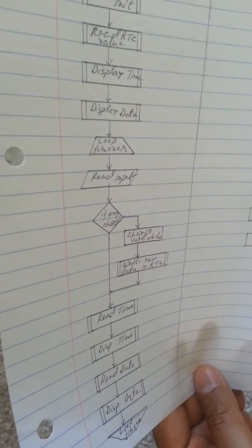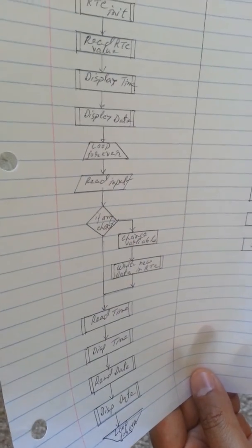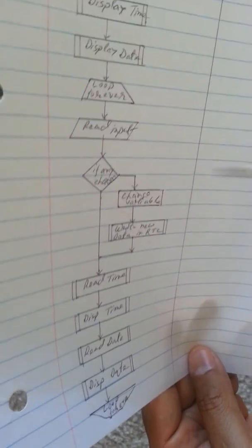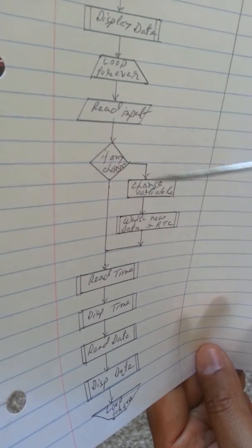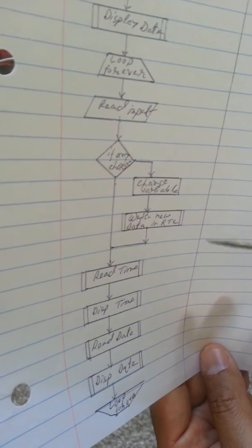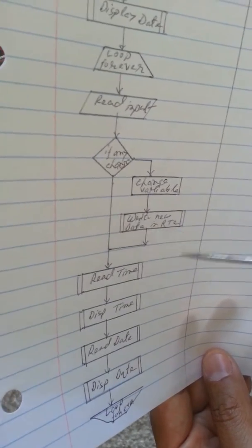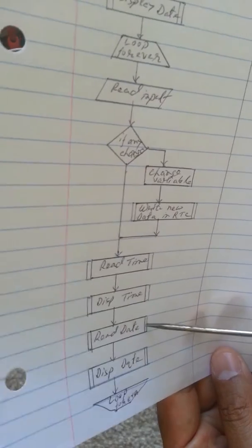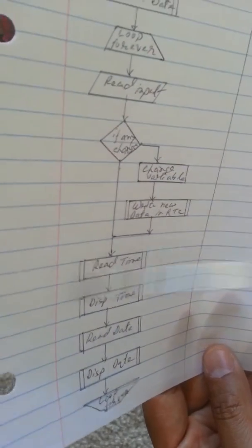The forever loop is designed here in order to give the user a separate input or ability to change the value. So you need to read the input, then you will check if there is an input available or not. If there is any change, then you need to update the value with the new variable, then you need to write this data to the RTC again. Then you need to read the time, display time, read date, display date. This is the end of the forever loop, which you need to do continuously so that you can see the data in the LCD continuously.